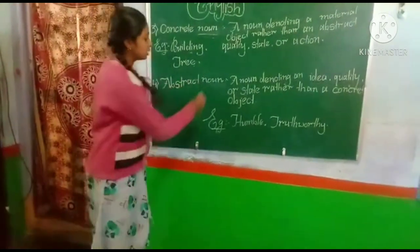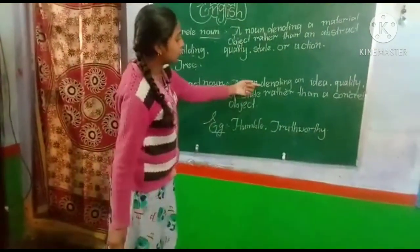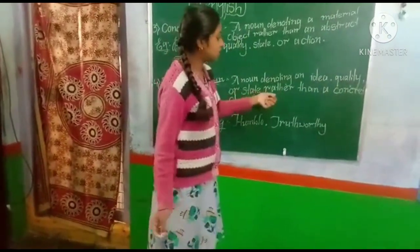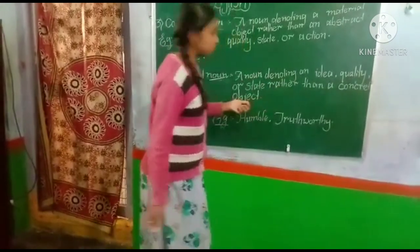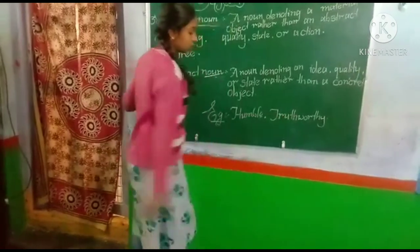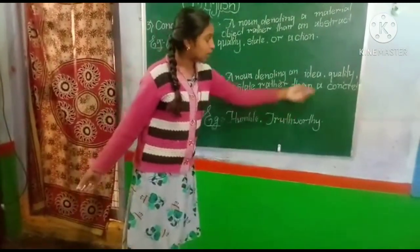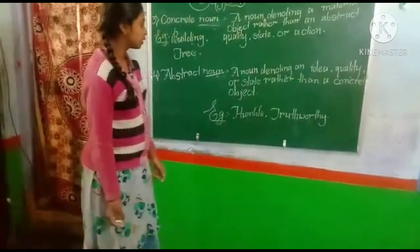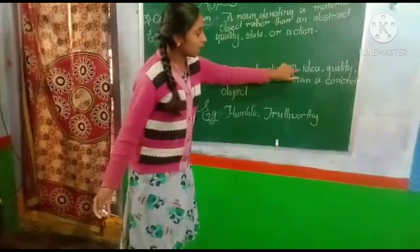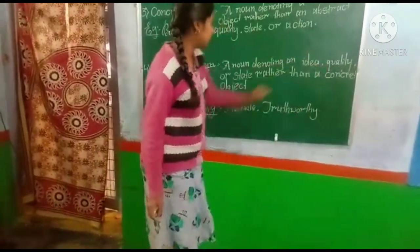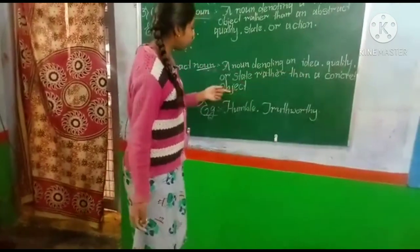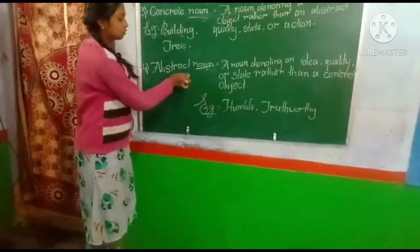Abstract noun: a noun denoting an idea, quality, or state rather than a concrete object. For example, humble and trustworthy. Humble and trustworthy belong to quality. So here, a noun denoting an idea, quality, or state rather than a concrete object is called an abstract noun.